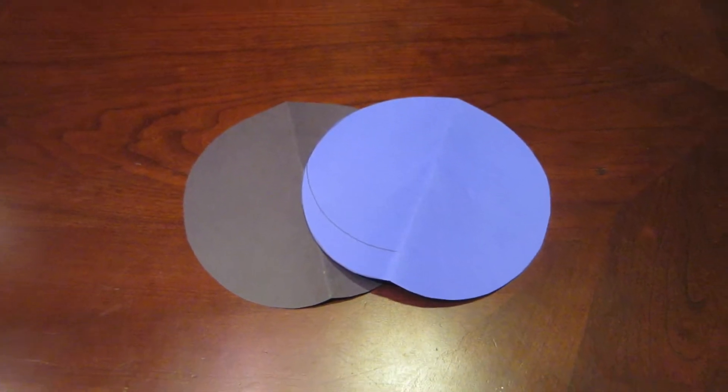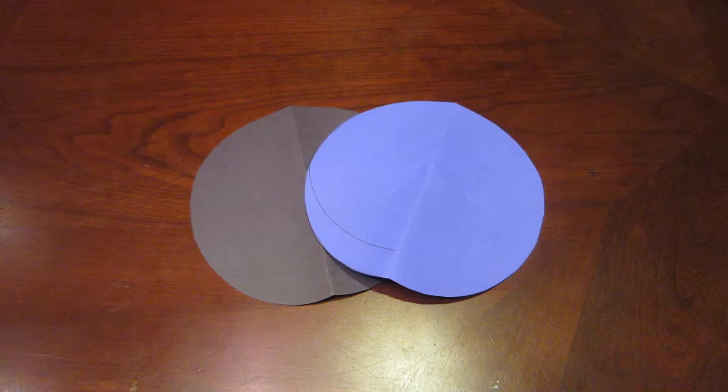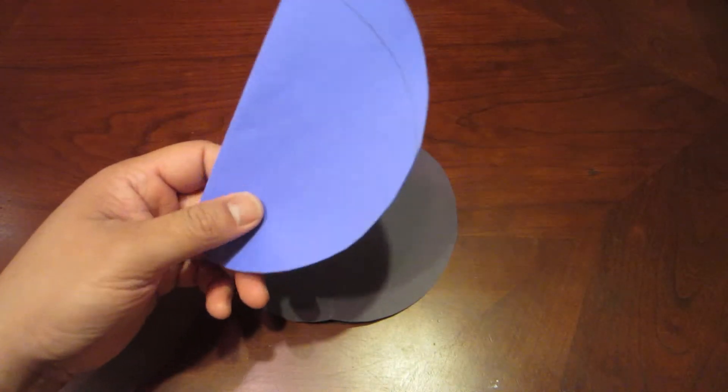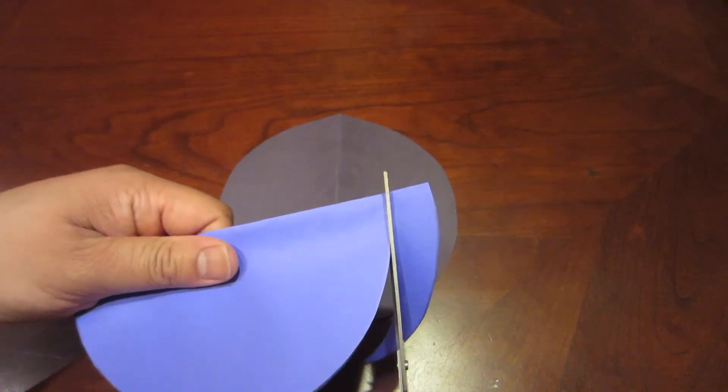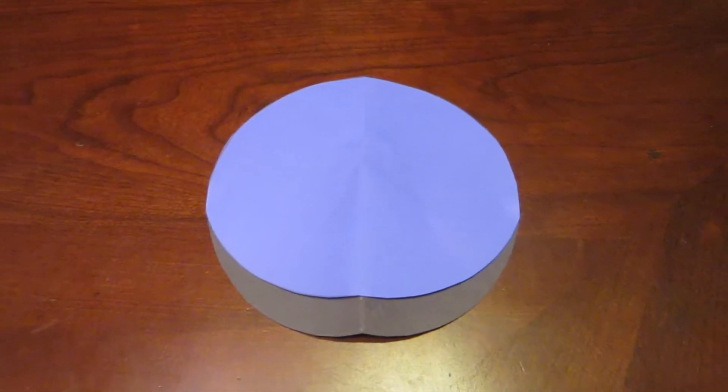When done, you should have two face cutouts, blue and black. Then take your blue circle only and cut off the mouth section. It should look like this when done.